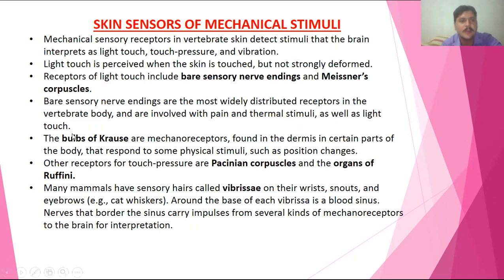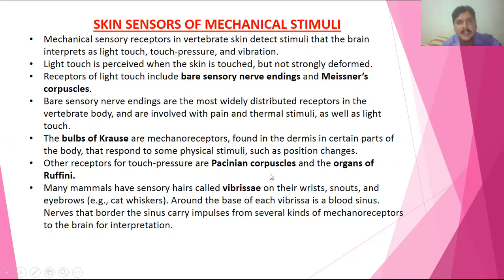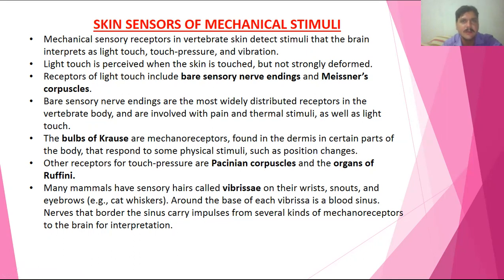There are also thermoreceptors that receive thermal stimuli. We have already discussed light touch receptors such as Bulb of Krause — these are mainly mechanoreceptors also present in the dermis of the skin. Another kind of touch pressure receptors are called Pacinian capsules, especially present in hairless body parts. The organ of Ruffini is also present in the skin and is mainly a pain receptor.